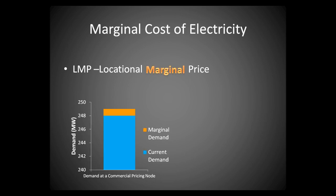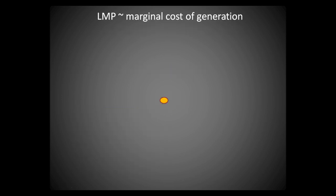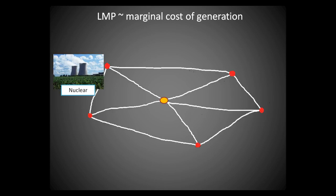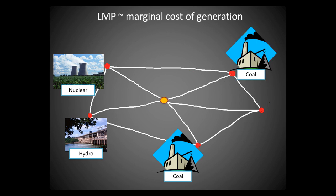The generator that is affected by such small changes in demand is called the marginal unit, or marginal generator. Let's say we have one commercial pricing node, CPN, and that node is connected to the electric grid, and power plants are currently supplying energy to the grid. Each of these generators has a different cost per megawatt hour produced. If we have a one megawatt increase in demand, the marginal generator will be the one to respond to this demand, because the other generators are either already at their max capacity or not capable of responding quickly enough.